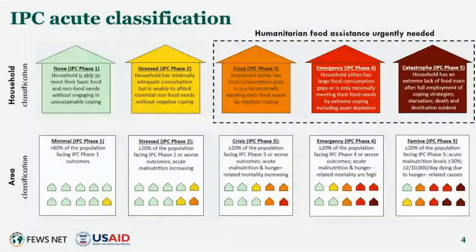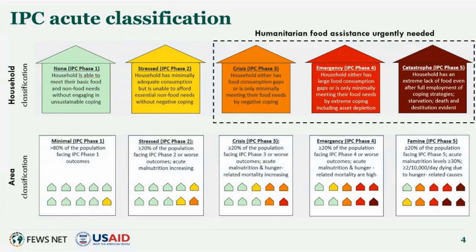This slide provides an overview of the IPC 3.1 phase classification scale for acute food insecurity. There are five phases, ranging from minimal phase one up to catastrophe phase five. At least 20 percent of a given area's population must meet the criteria for a given phase in order for the area to be classified in that phase, with likely households experiencing different phases within the same area. For phase three and higher, humanitarian food assistance is urgently needed to protect livelihoods and fill food consumption gaps. FEWS NET uses an exclamation point to indicate when an area's classification would be one phase worse in the absence of current or programmed humanitarian assistance.